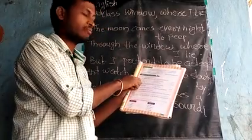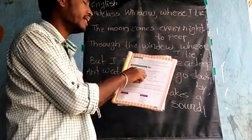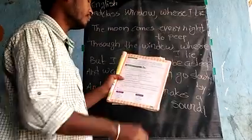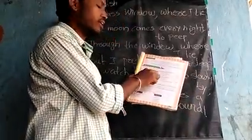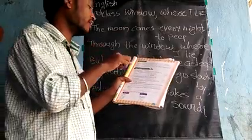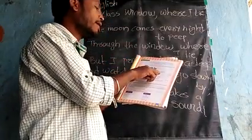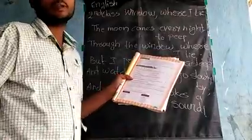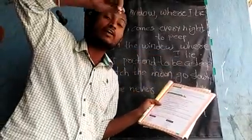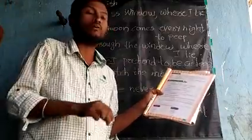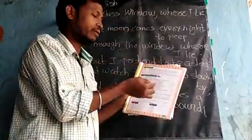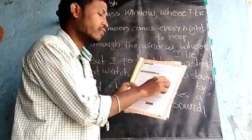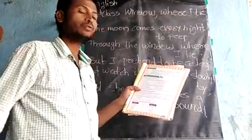Now take the correct answer. First question: the moon comes every night and peeps toward the — door or window? The moon comes every night and peeps toward the window. So we tick option B — window.